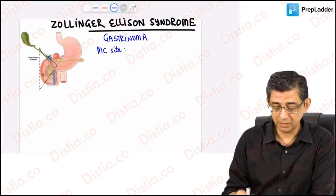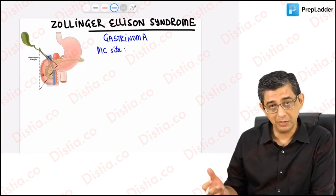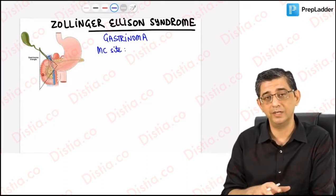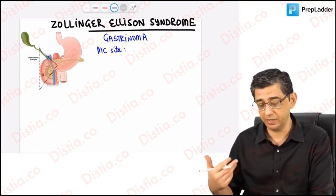The number one site where this would be encountered would be the duodenum. Though you can see an illustration of the gastrinoma triangle, I'll hand draw the gastrinoma triangle to help you understand the boundaries which can be asked in a relatively anatomy, pathology, and medicine-based question.